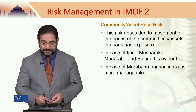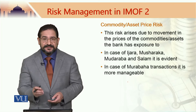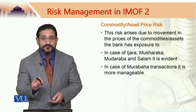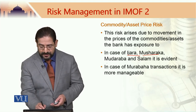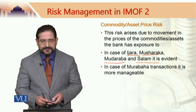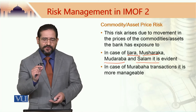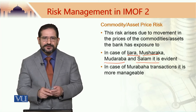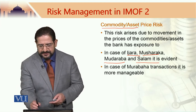Commodity and asset price risk arises due to movement in the prices of assets or commodities to which Islamic banks have exposure because of their use of a certain mode of finance. In the case of ijara, musharaka, mudaraba, and salam it is quite evident. In the case of murabaha transactions it is more manageable, because in murabaha the first purchase and the second sale are quite close to each other, so the bank's exposure to commodity or asset price risk is rather limited.